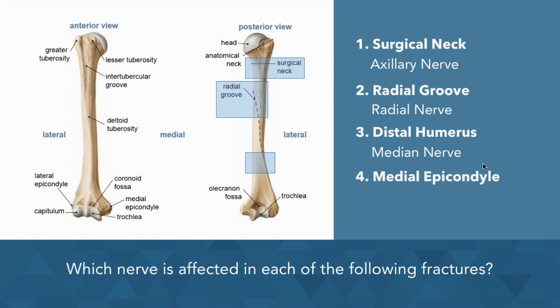And last, let's look at the medial epicondyle. Along the medial epicondyle is the ulnar nerve, which is the nerve that would be affected by a fracture of the medial epicondyle.